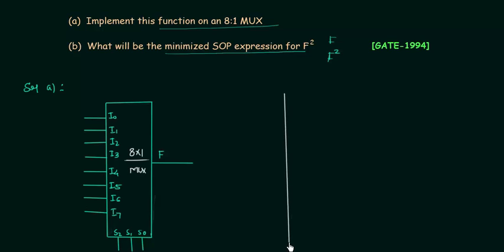I will quickly make the truth table for 8:1 MUX. S2, S1, and S0 are the three selector variables. We have 8 possible combinations: 000, 001, 010, 011, 100, 101, 110, and 111.